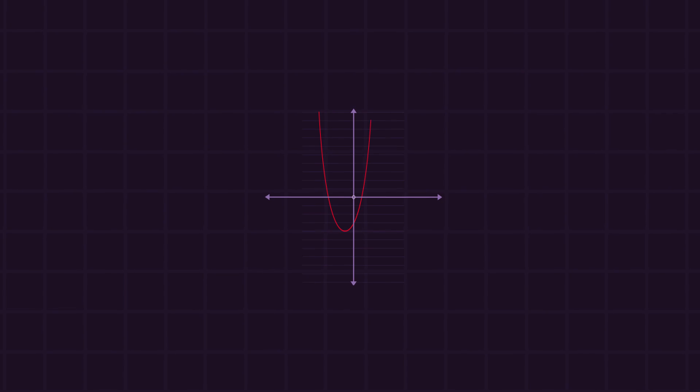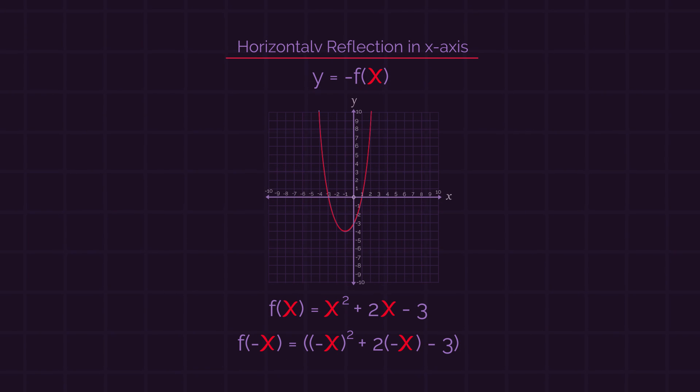Whereas for a horizontal reflection, so a reflection in the y-axis, we need to apply the negative only to the x's in the equation.